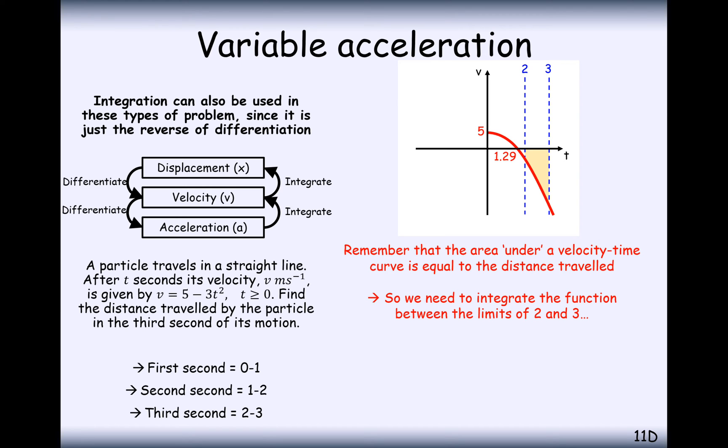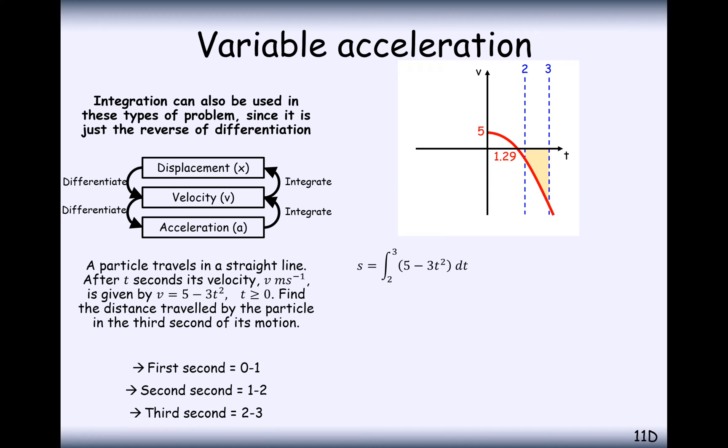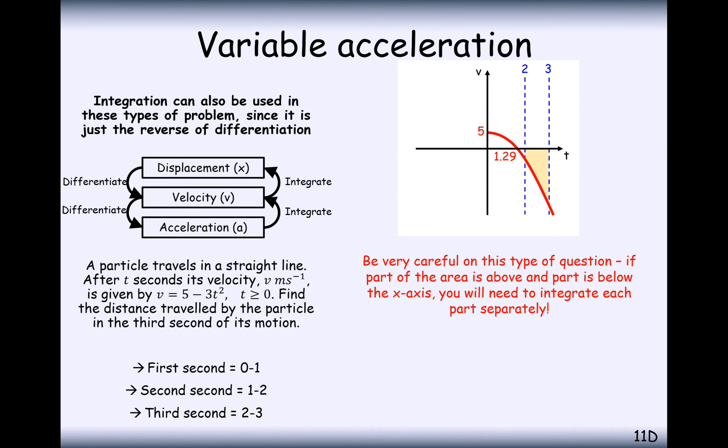We need to integrate the function between the two limits. Remember where we saw integration in the pure part where we integrate between limits? That's what's going on here. If we want to find the distance traveled in the third second, then that's effectively integrating in between 2 and 3. Do the integration. Substitute in the values. Do the subtraction. And you get minus 14. You'd expect a negative because that part of the graph is on the bottom part of the coordinate axes. But given that we're working with distance here, the distance therefore traveled is 14 meters.